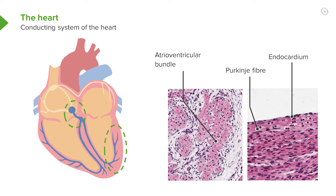The atrio-ventricular bundle is just a large bundle of Purkinje fibres. Those Purkinje fibres then branch out and head down through the myocardium, generally very closely associated with the subendocardial layer, and that's where you can locate them histologically.